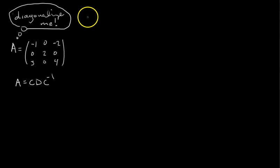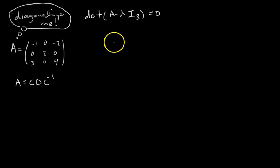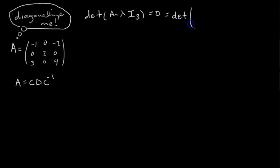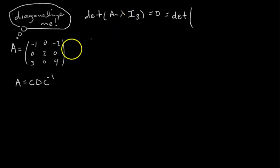First step of any diagonalization problem: you got to find the eigenvalues of the matrix. How do you do that? You say determinant of A minus lambda I₃ and set it equal to zero. A minus lambda I₃ just means take away lambda from the main diagonal entries, so that looks like this.